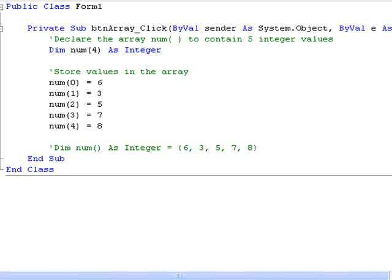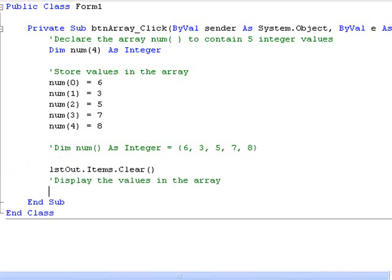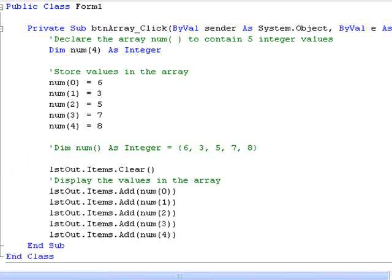Now let's write some code to display the values in the array. To do this we simply display the contents of each element. When we look at these lines of code though, we can see that they involve a lot of repetition, and this should suggest that we can use a loop to achieve the same result. A for next loop would be the most appropriate as we know that we will have to execute it five times.